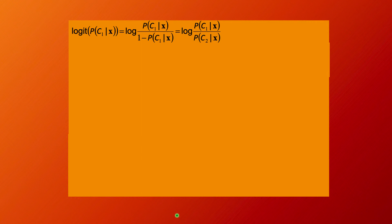This is also called the log odds of y, or of the probability of class C1. The logit function is defined as: logit(y) = log(y / (1 - y)). Applied to the probability of class C1, this is the logarithm of the probability of C1 divided by 1 minus that probability — which equals the log ratio of the probability distributions of class C1 over class C2.